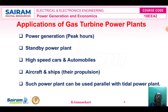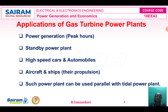Applications of the gas turbine power plant: it can be used as a standby power plant, and as a peak-hour power plant for power generation at peak hours. The gas turbine power plant can be used in high-speed cars and automobiles, and in aircraft ship propulsion. The gas turbine power plant can also be used in parallel with the tidal power plant to meet load demand.